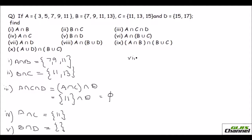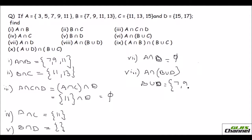The seventh one is A intersection D — nothing is common in A and D, so that is an empty set. The eighth one is A intersection (B union D). First find B union D: B gives 9, 11, 13 and D gives 15 and 17. Then A intersection (B union D): comparing with A, you find 7, 9, and 11.